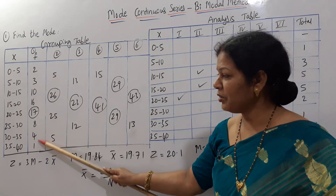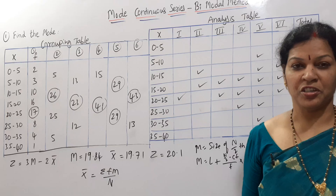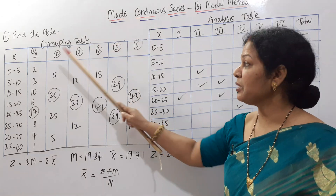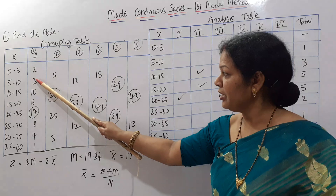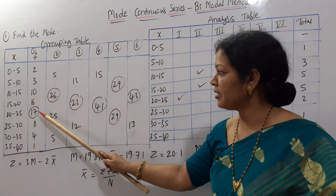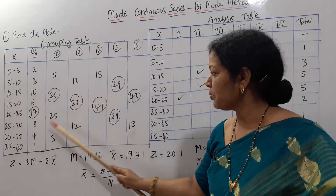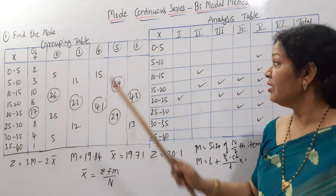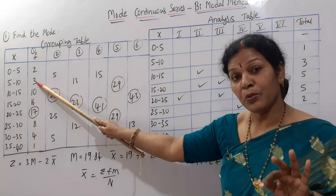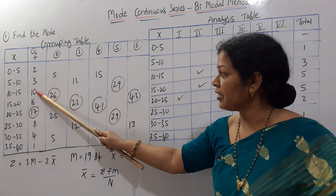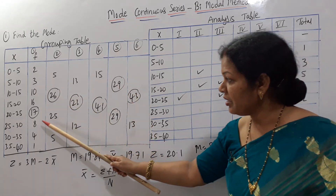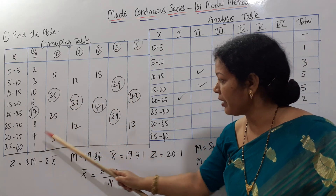For the fifth column, we add three values starting from the second: 3 plus 10 plus 16 is 29; 17 plus 8 plus 4 is 29. For the sixth column, we again add three consecutive values: 10 plus 16 plus 17 is 43; 8 plus 4 plus 1 is 13.